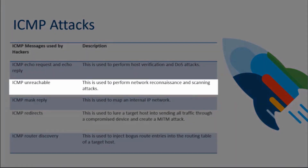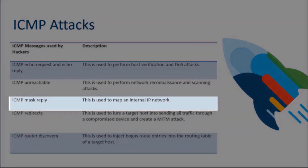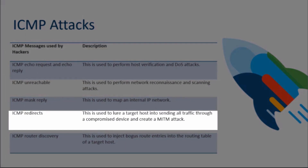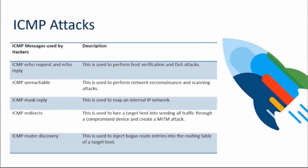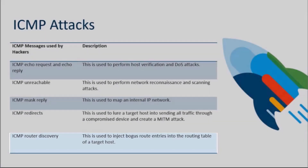With ICMP unreachable messages, we can perform network reconnaissance and scanning attacks. With mask reply, we can try to map an internal IP network. With redirects, we try to lure a targeted device into sending all of its traffic through a compromised device, which then executes a man-in-the-middle attack. With router discovery, we try to inject bogus route entries into the routing table of a targeted host — just imagine the impact of a host having bogus route entries.